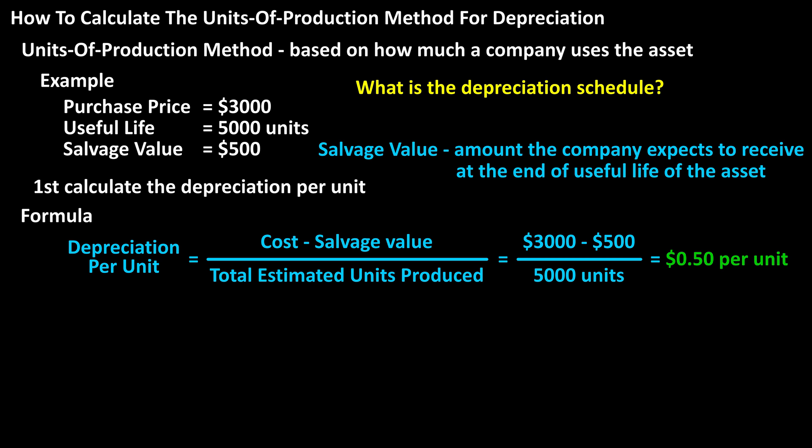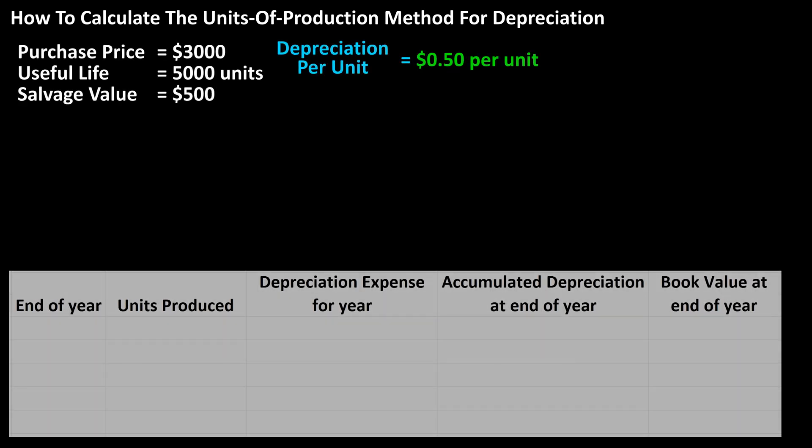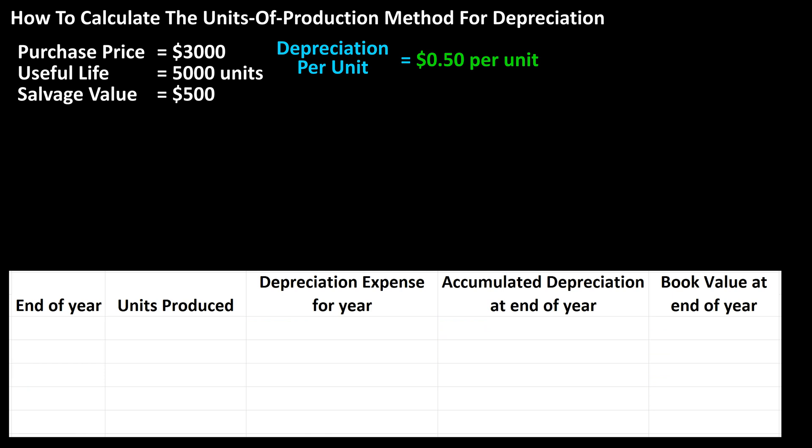Now we're going to create a depreciation schedule with five columns: end of year, units produced, depreciation expense for year, accumulated depreciation at end of year, and book value at end of year. One note about book value: the value in this column cannot go below the salvage value of the asset, which in this case is $500.